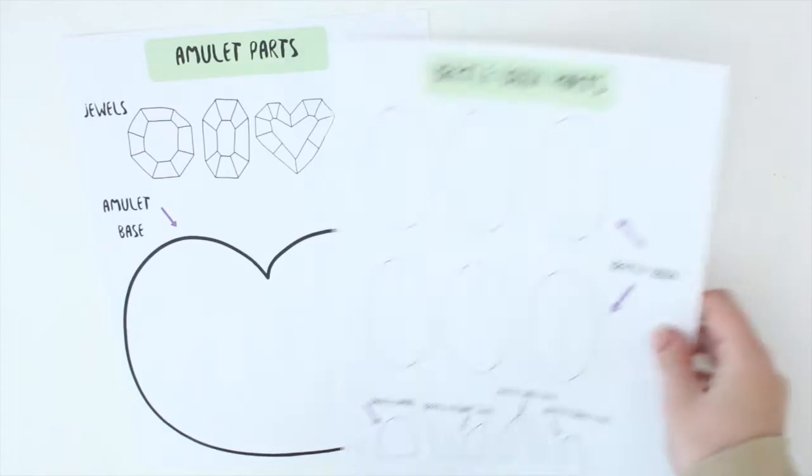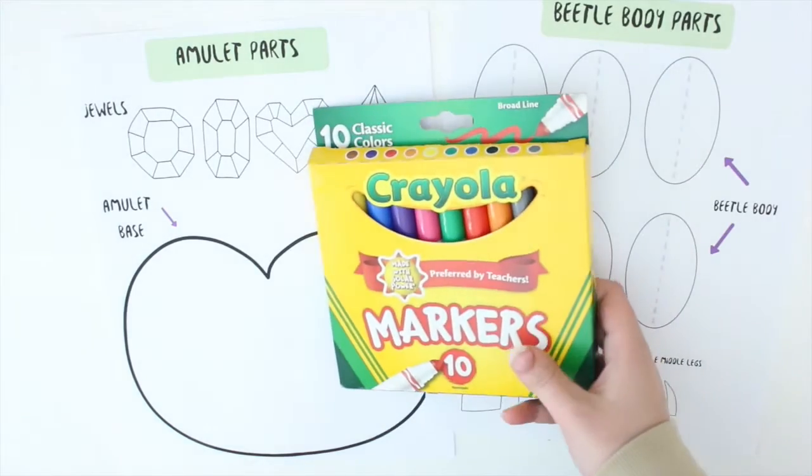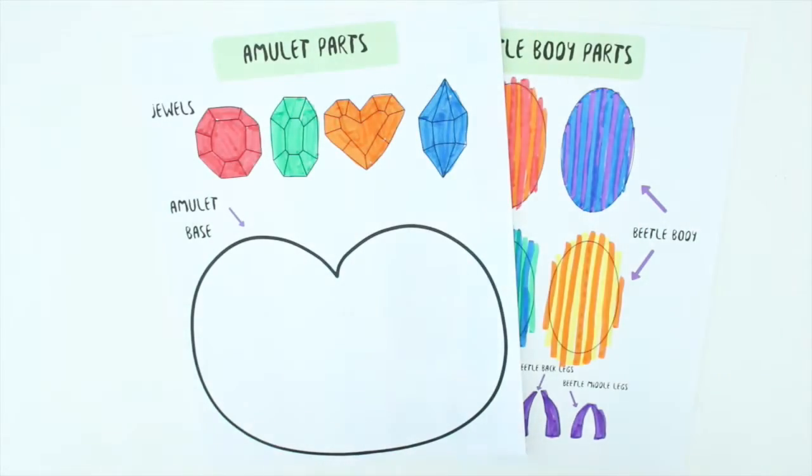To get started, grab your beetle parts and your amulet parts. We are going to color the beetle body parts and the jewels, and then cut them out with a pair of scissors.